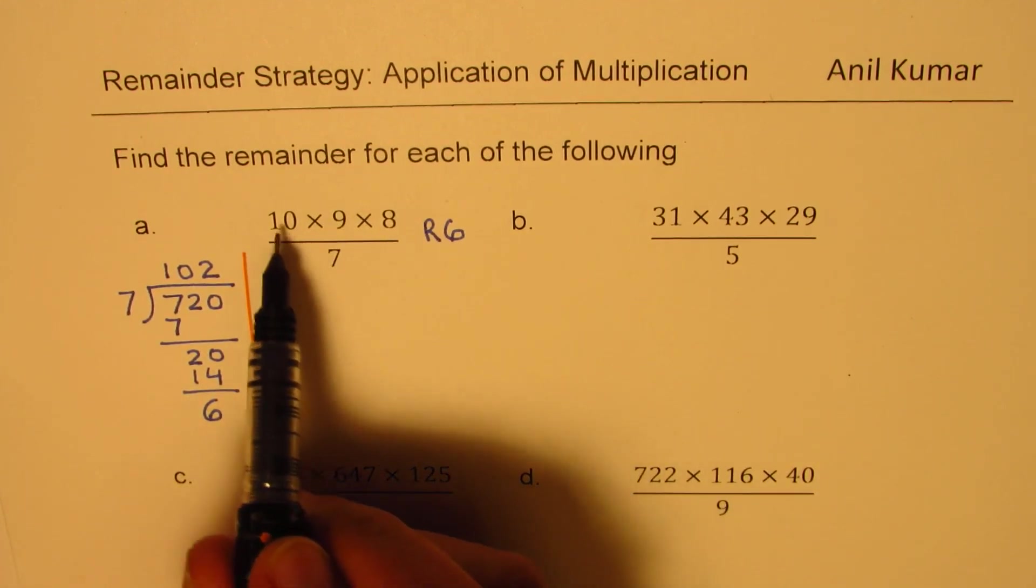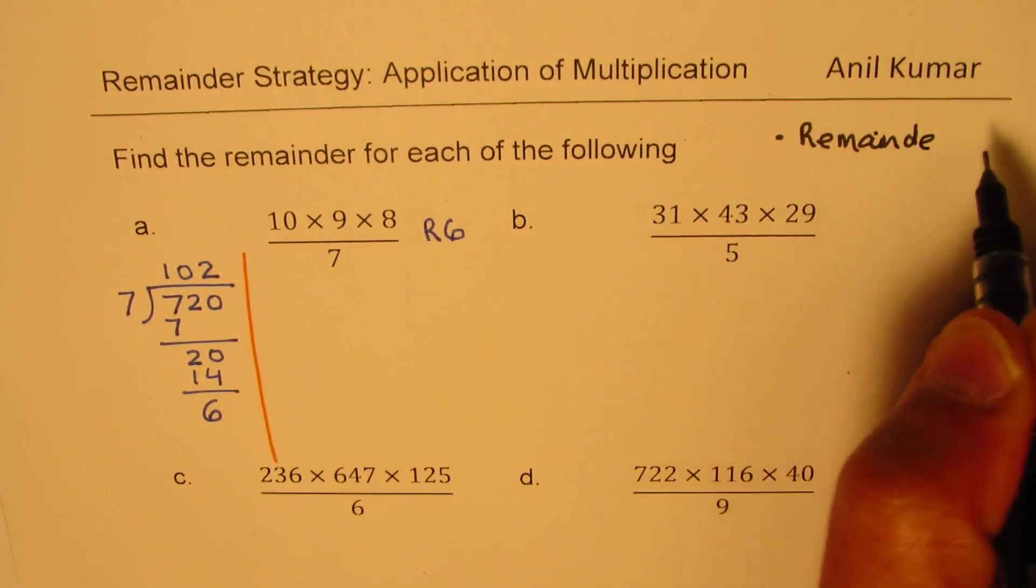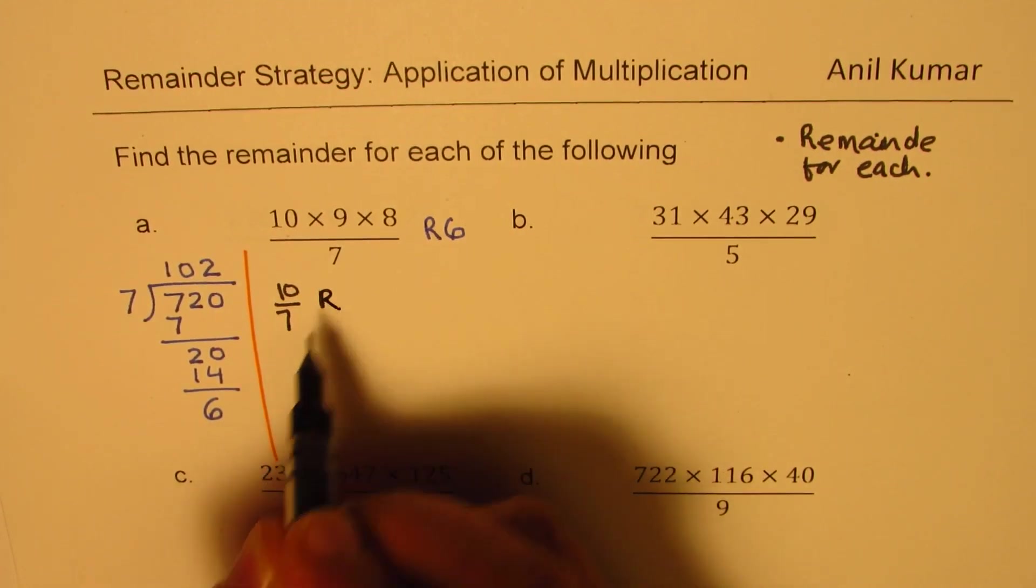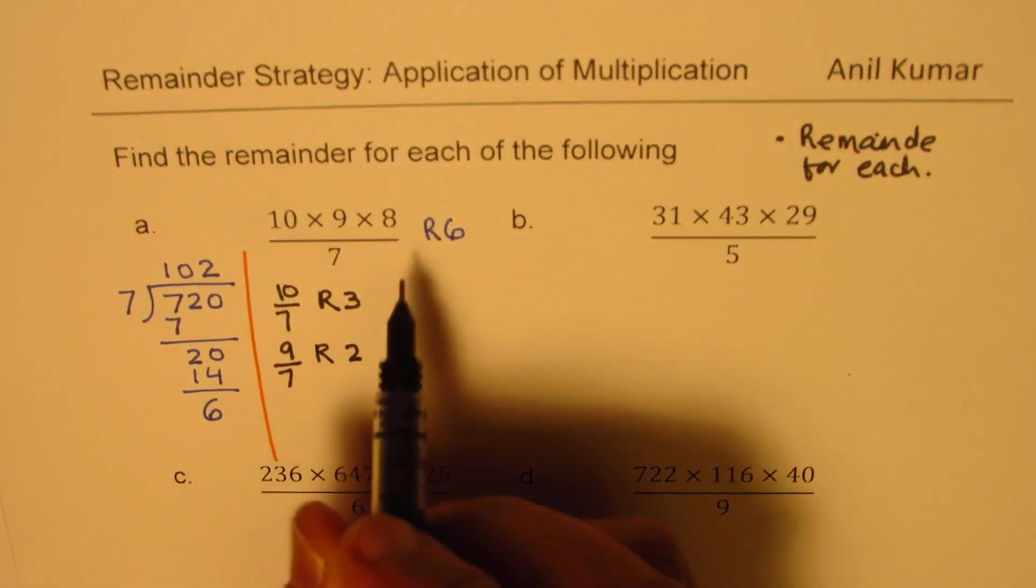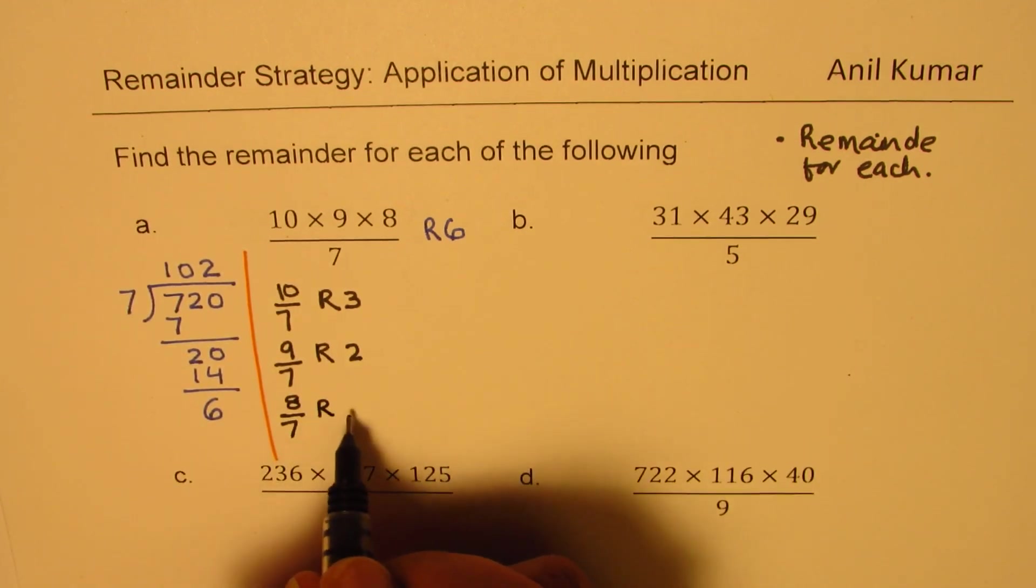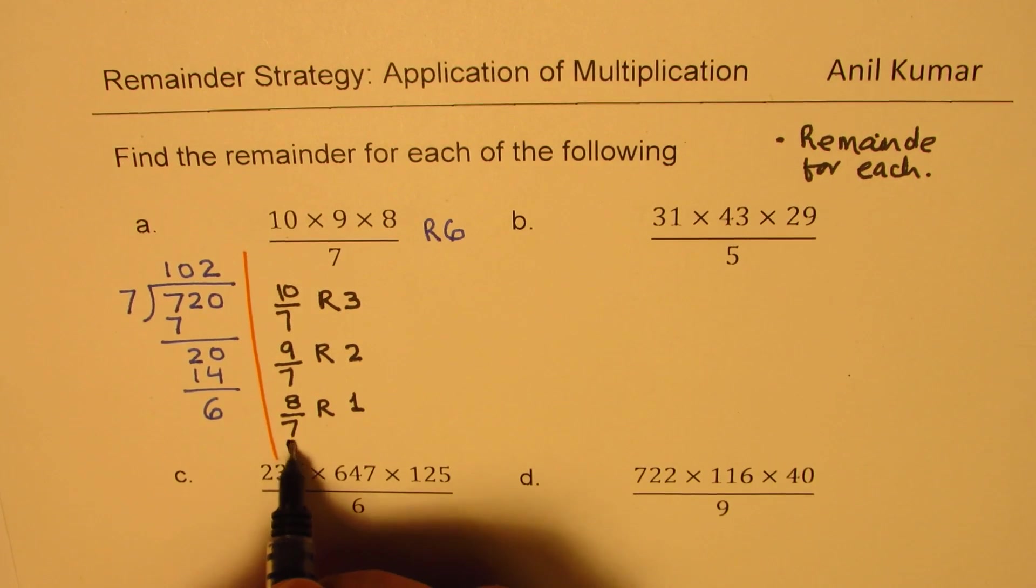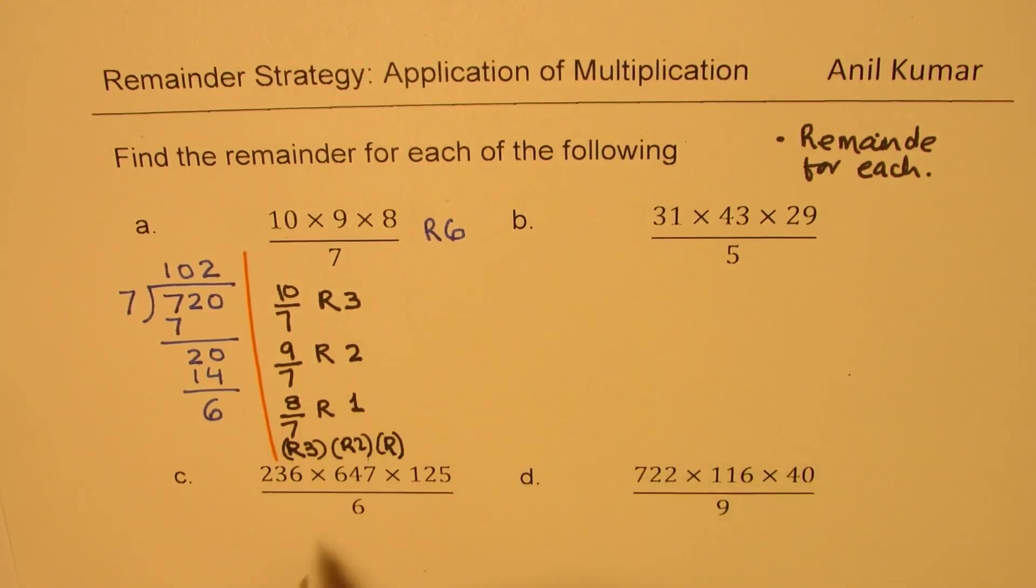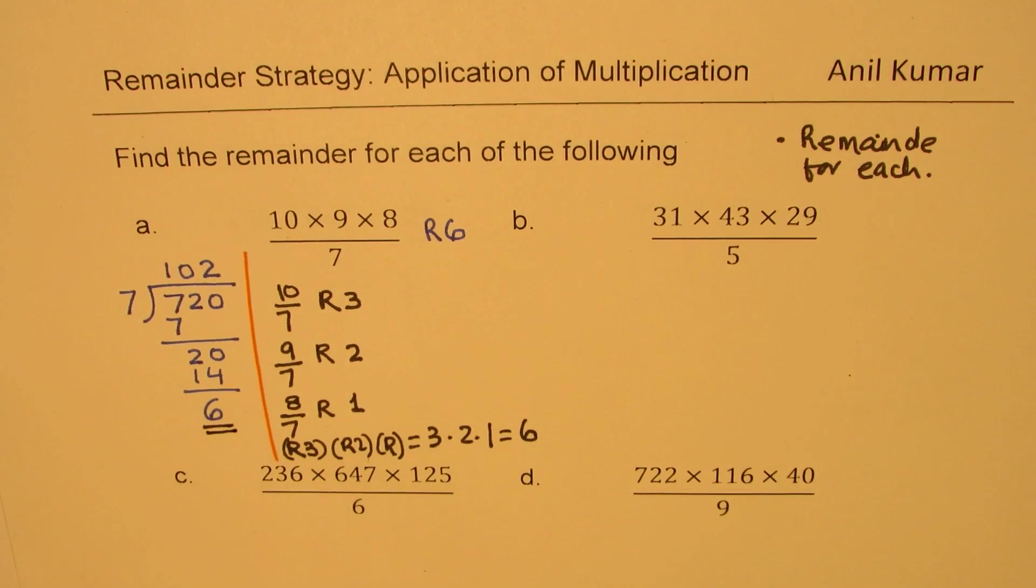The strategy here is we can find remainder for individual items. So, the strategy here is remainder for each. That is to say, if I divide 10 by 7, my remainder will be 3. If I divide 9 by 7, in that case, the remainder will be 2. And if I divide 8 by 7, then the remainder will be 1. Do you see that this remainder is actually product of these three remainders. So if I do the remainder's product, r3 times r2 times r1, I get actually 3 times 2 times 1, which is 6.